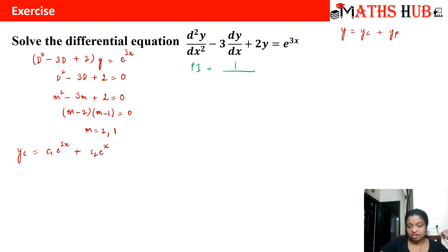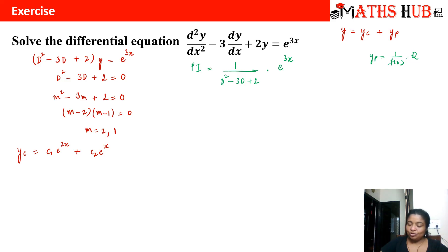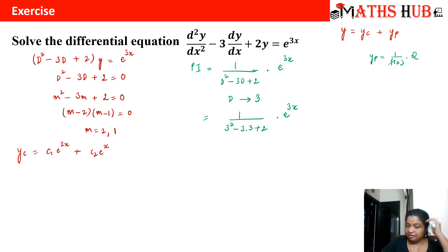The particular integral is yp = (1/f(D))·e^(3x), where f(D) = D² − 3D + 2. According to the rule we replace D by a = 3, giving 3² − 3(3) + 2 = 9 − 9 + 2 = 2. So yp = (1/2)e^(3x). The complementary solution and particular integral are now both determined.